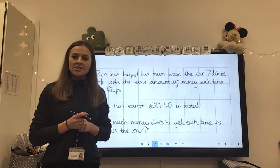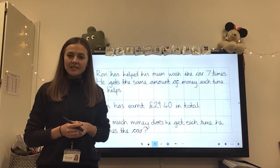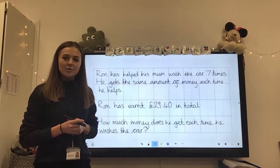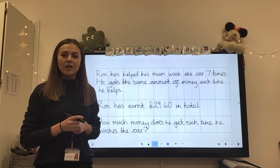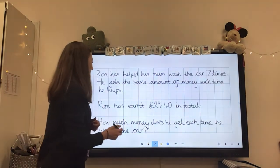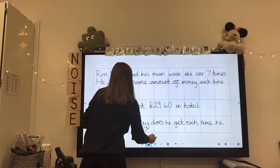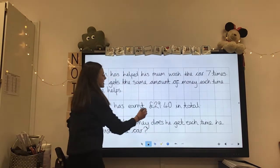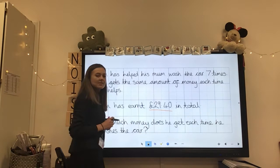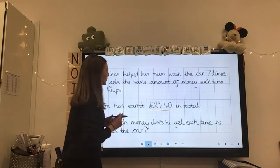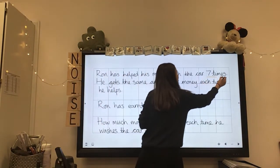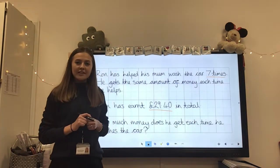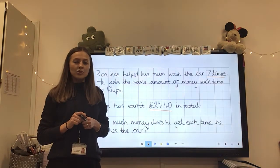So the first thing we need to do is actually figure out what the question is asking us. What we need to work out is how much money Ron receives each time he washes the car. Okay, so let's look at what facts we already know. We know that Ron has earned £29.40 in total. We also know that he's washed the car seven times. So to find out how much money he receives each time he washes the car, what do we need to do?